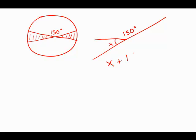Well, these two angles together add up to a straight line. x plus 150 degrees equals 180 degrees, the angle on a straight line. Subtract 150 degrees from both sides and we get that this small angle is 30 degrees.